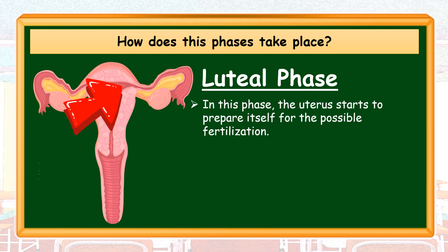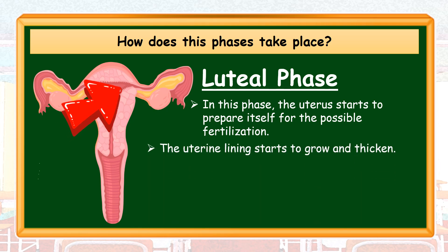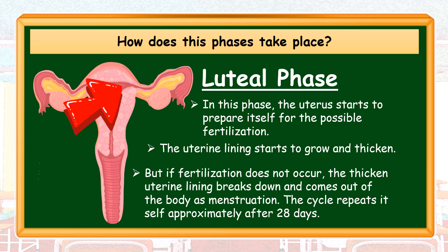Luteal Phase: In this phase, the uterus starts to prepare itself for the possible fertilization. The uterine lining starts to grow and thicken. But if fertilization does not occur, the thickened uterine lining breaks down and comes out of the body as menstruation. The cycle repeats itself approximately after 28 days.